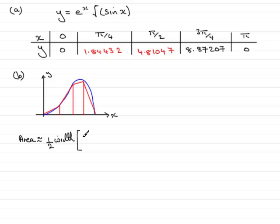Multiplied by the first height, plus twice the sum of the middle heights, so write that down, sum of the middle heights, and then we plus the last height.